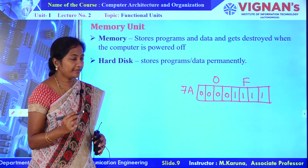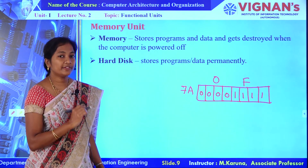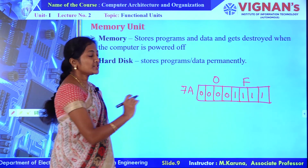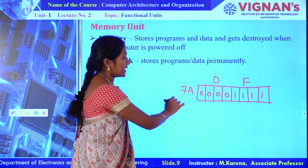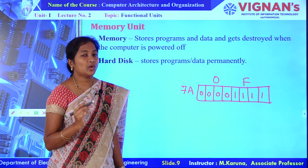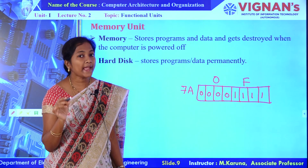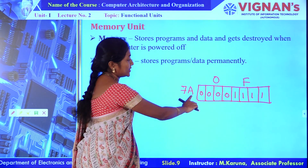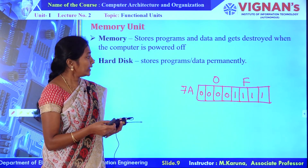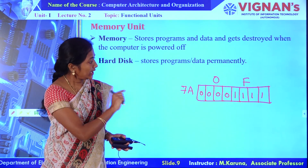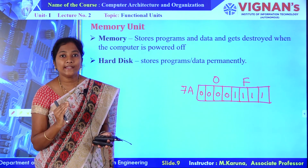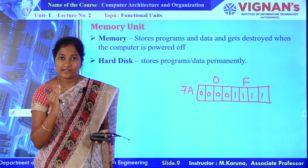Data is stored in terms of binary digits 0s and 1s. Each memory location is associated with some address. Each memory location or data can be accessed with the help of this associated address. To store 8-bit data, that location requires 8 semiconductor cells.